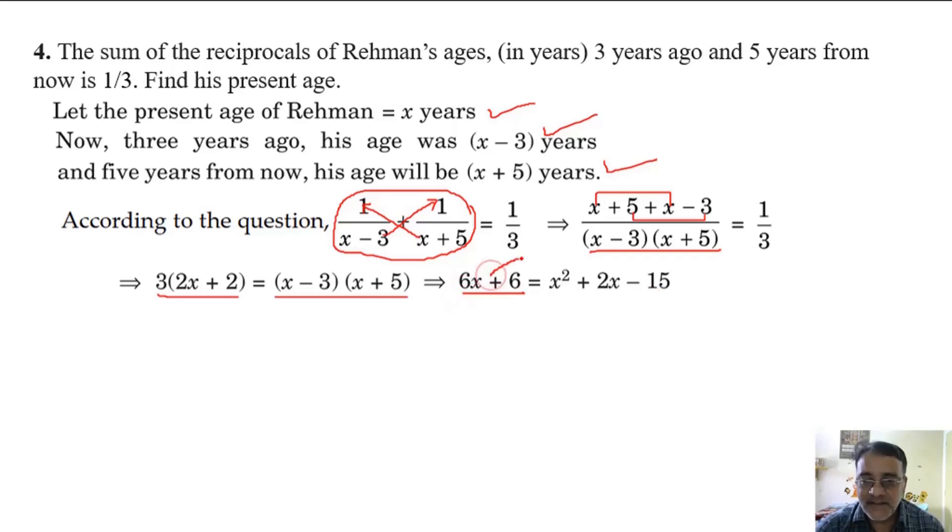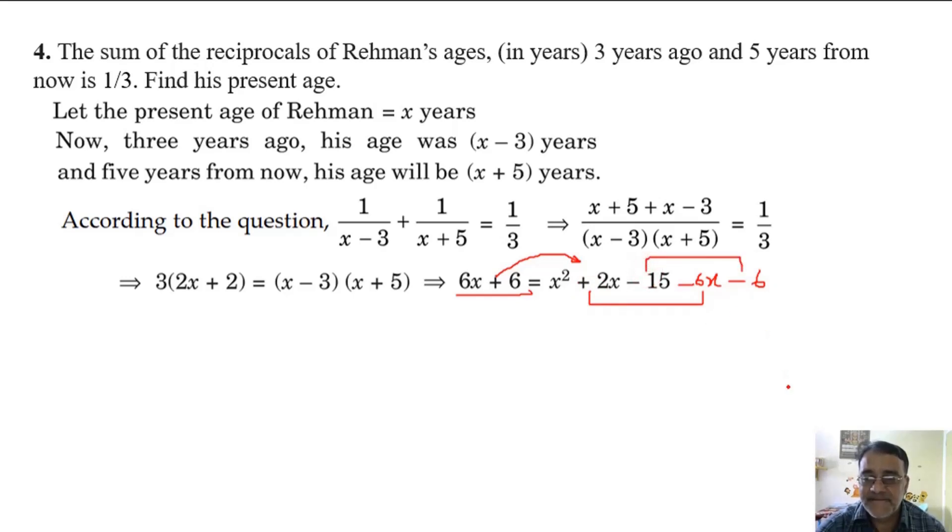Now you can do the shifting to this side. These two shift here. So minus 6x plus 6. Plus 2 minus 6 is equal to minus 4. So x square minus 4x minus 21 equals 0.